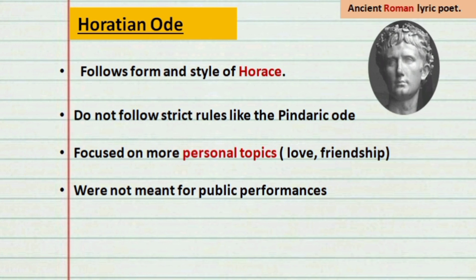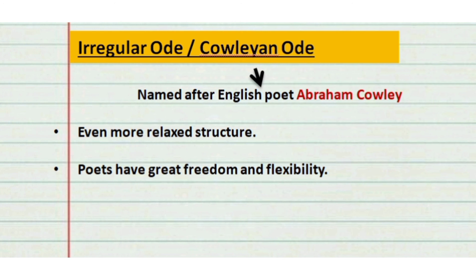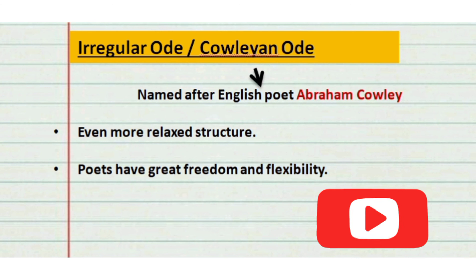The third type of ode is the Irregular Ode, also called the Cowleyan Ode, named after the English poet Abraham Cowley. These types of odes have an even more relaxed structure, giving poets great freedom and flexibility. That's all for this video — if you found it useful, please subscribe to the channel for more videos.